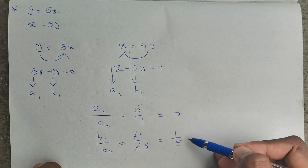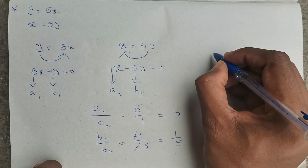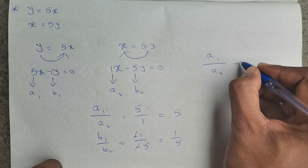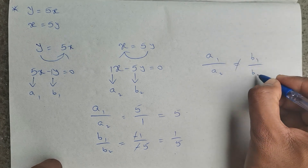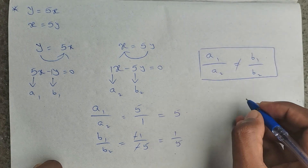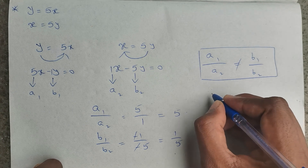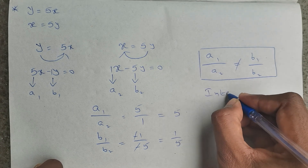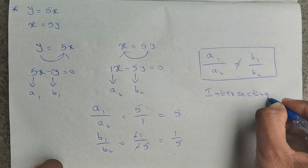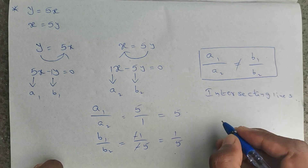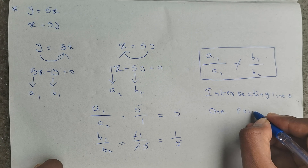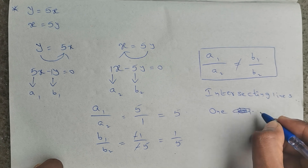Here 5 and 1 by 5 are not equal, so we can conclude a1 by a2 is not equal to b1 by b2. When a1/a2 is not equal to b1/b2, the two lines are intersecting lines, and therefore the system has exactly one solution.